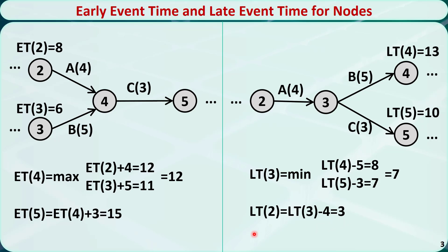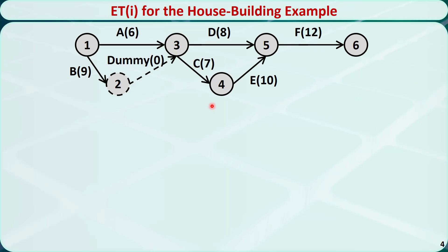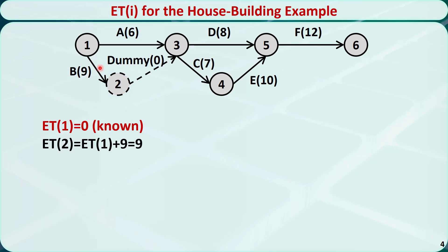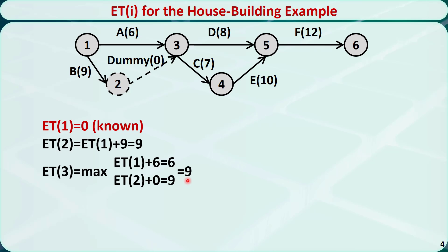After we are clear with the two special cases, let's check the house building project network introduced in the previous video. Assume that we know the early time of node 1 is 0 — that is the start time of the entire project. For node 2, the early time equals the early time of node 1 plus the duration of activity B, which is 9. For node 3, the early time has two options: the early time of node 1 plus the duration of activity A equals 6, and the early time of node 2 plus the duration of the dummy activity equals 9. We pick the larger value, 9, as the early time for node 3. For node 4, the early time equals the early time of node 3 plus the duration of activity C, which is 16.